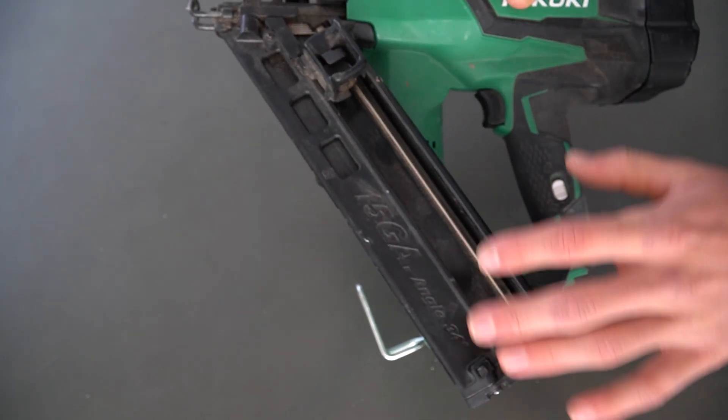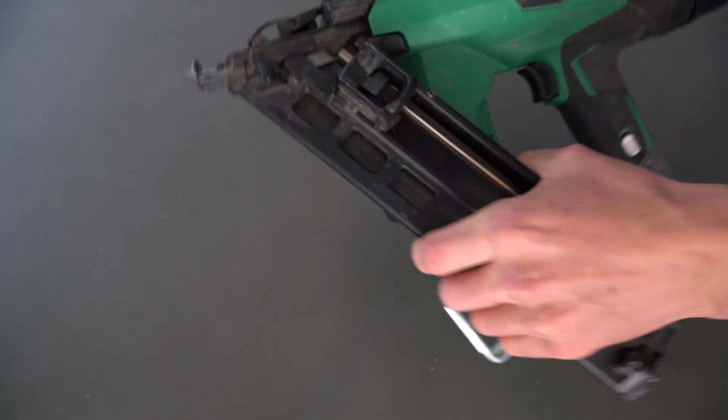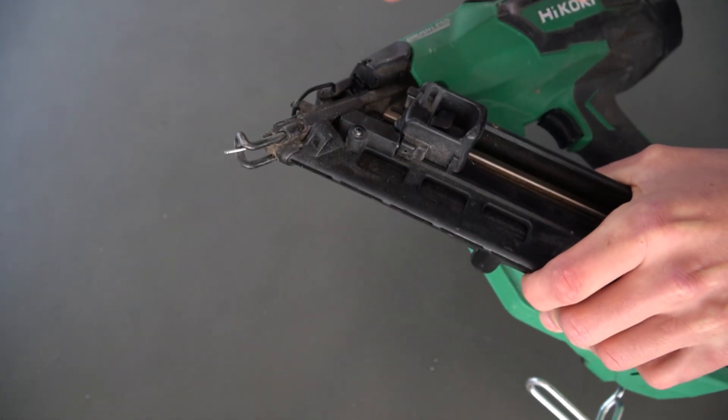Now, the first thing you want to do is, if you've got any more nails in your magazine, you want to pull it back and release the nails. Because once you open up this gun, the magazine clip is just going to shoot any excess nails out to the top.